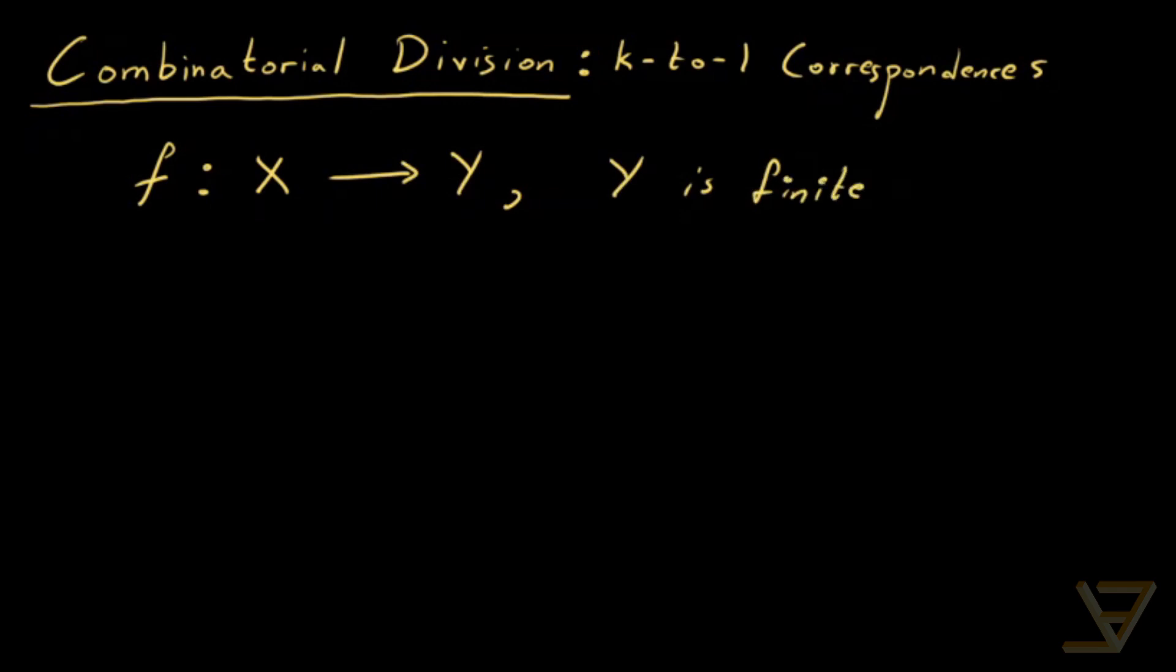And suppose that we have the property that for all y in Y, the pre-image of little y has cardinality equal to k, where k is some positive integer. Then we call this a k-to-1 correspondence.